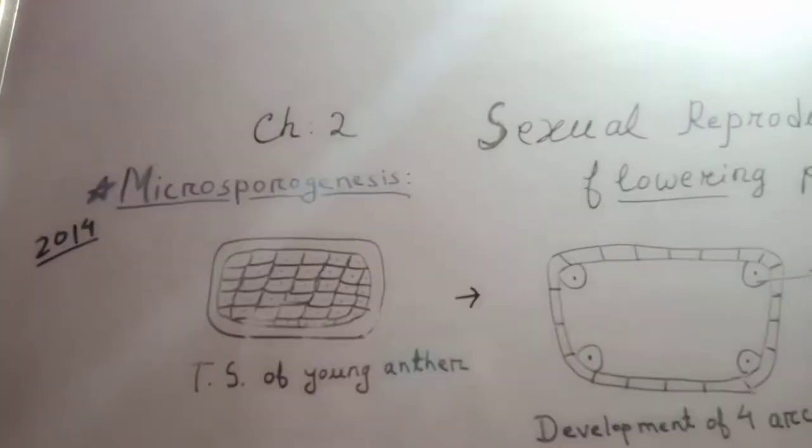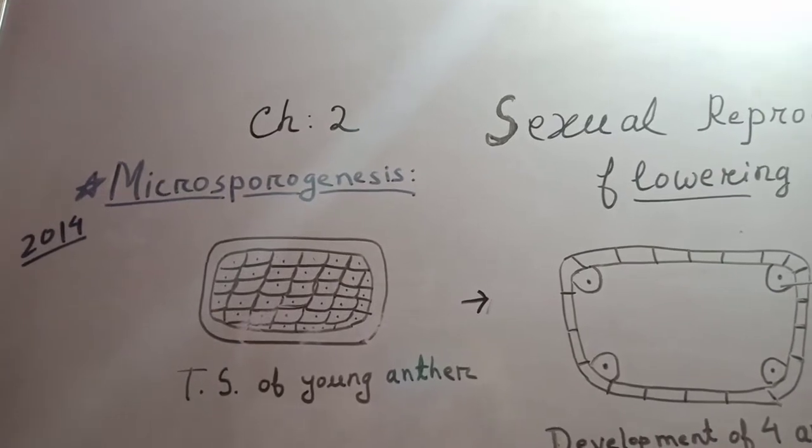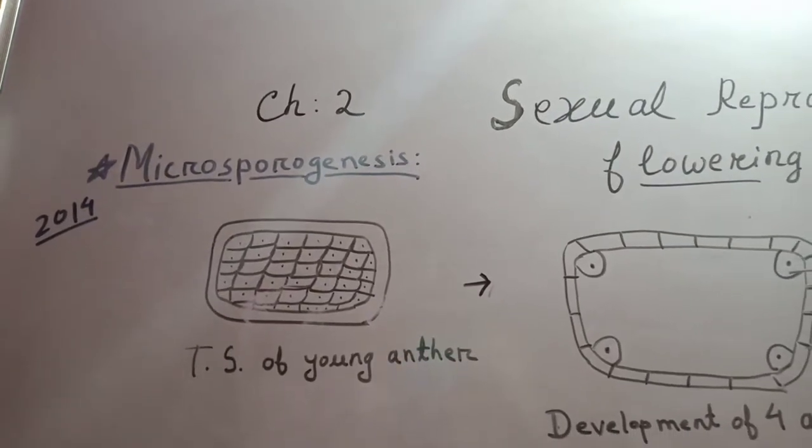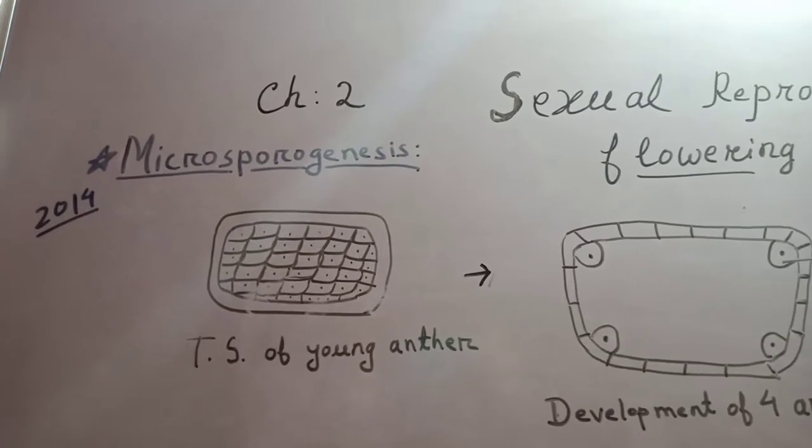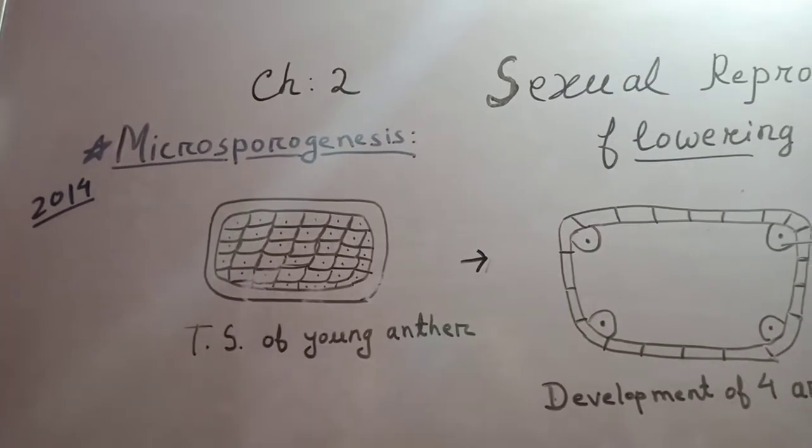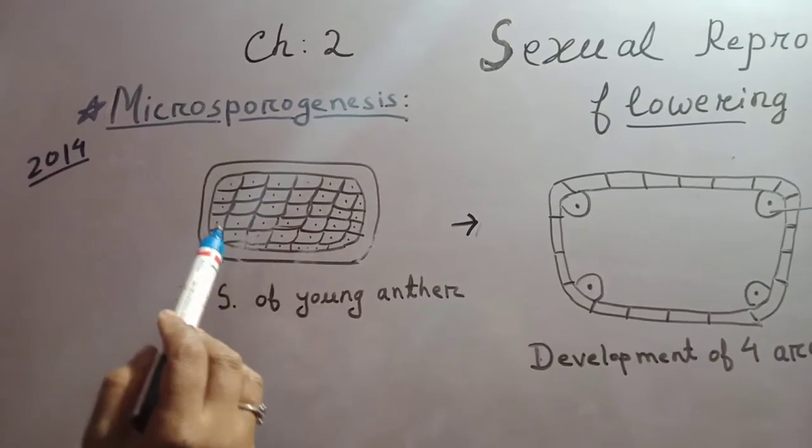Now we start microsporogenesis. It is the process of formation of microspores or pollen grains. A young anther comprises of a homogeneous mass of cells.